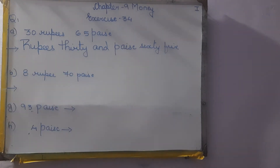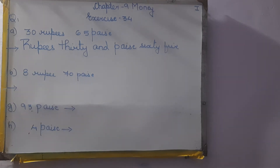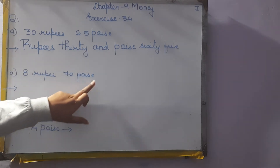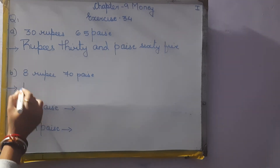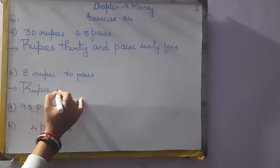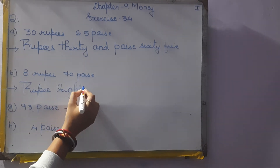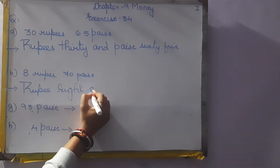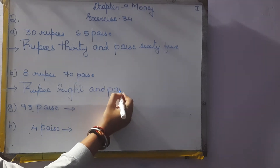Next is given 8 rupees and 70 paise. So how we are going to write? We are going to write: Rupees 8 and paise 70.